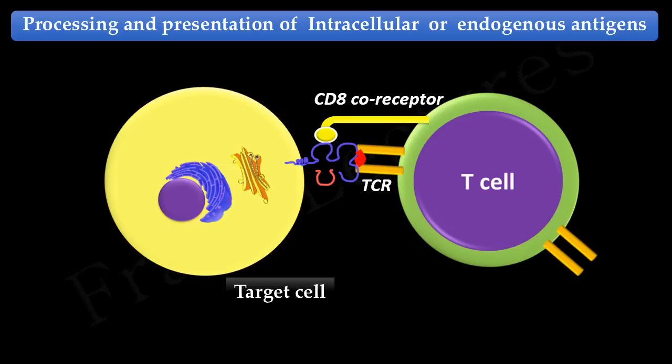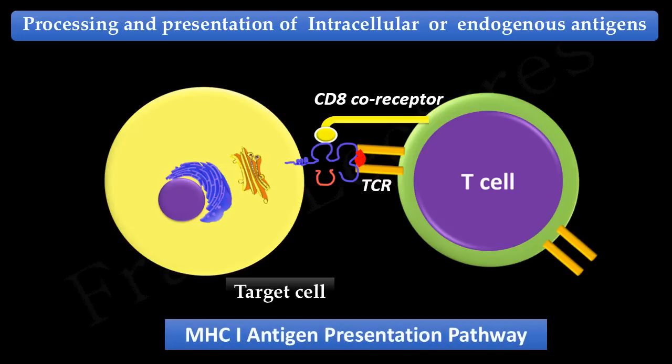Thus, the T cell interacts with both the peptide and the MHC molecule on the surface of the target cell. Since this pathway involves MHC class 1 molecules, it is also known as the MHC class 1 antigen presentation pathway.